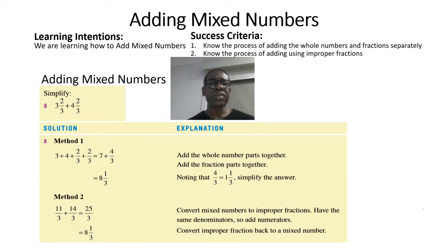Method 1: Add the whole number parts together and add the fractions separately. 3 plus 4, plus 2/3 plus 2/3.